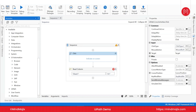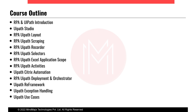Now let's go into the course contents. RPA and UiPath introduction will take you through the tool and show you how options are placed and why. The tool I showed you is called UiPath Studio — this is where we develop our bots. Once the bots are developed, we deploy them in a cloud environment called the Orchestrator. We'll also learn UiPath layout, scraping — which is how you get data from your browser or website.